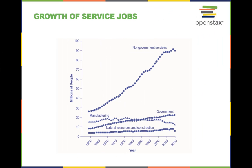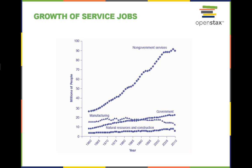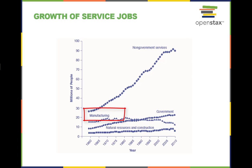Over the years, job types that have supported union activities have shrunk in relation to other job types. Non-governmental service jobs are typically not unionized. Jobs in services have increased dramatically in the last few decades. Jobs in government have increased modestly. Jobs in manufacturing have not changed much, although they have trended down in recent years.